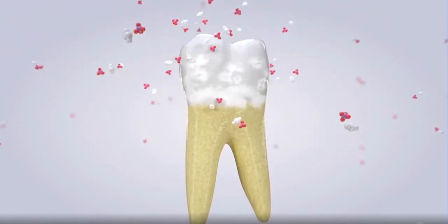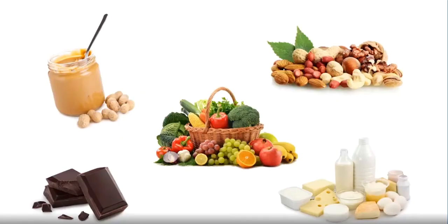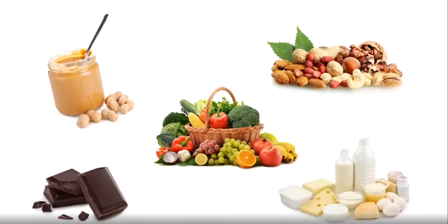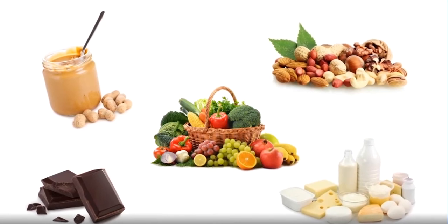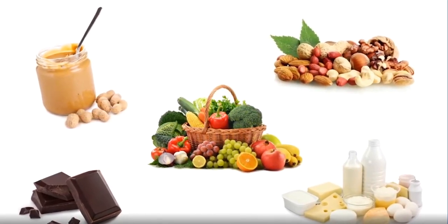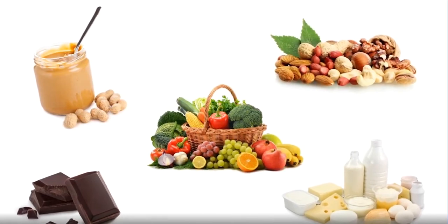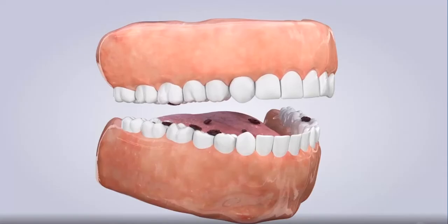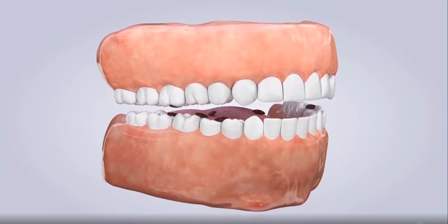This is the start of a cavity and demineralization of a tooth. To help decrease the amount of acids on your teeth, limit between-meal snacking. Fewer snacks mean less acid exposure for your teeth. If you snack, choose healthy foods and non-fermentable carbohydrates. The longer food stays on the tooth, the more acids will be produced.